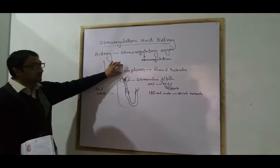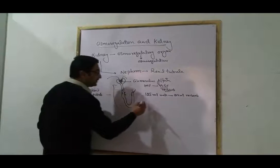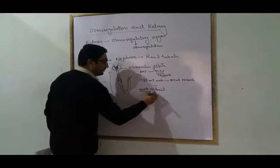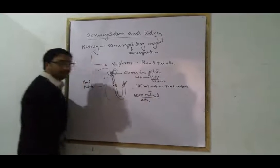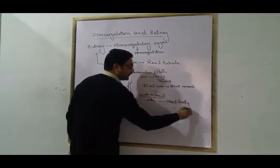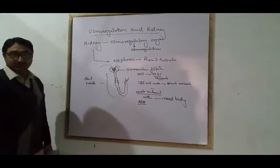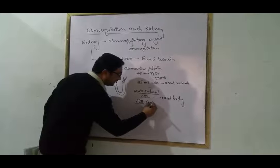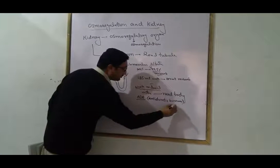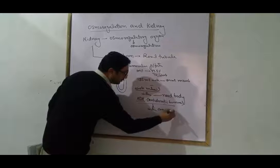When the body needs water, the body releases ADH — anti-diuretic hormone. The function of ADH is water conservation. ADH causes water channels to open in the renal tubule, allowing the kidneys to reabsorb more water. This means the urine level decreases.